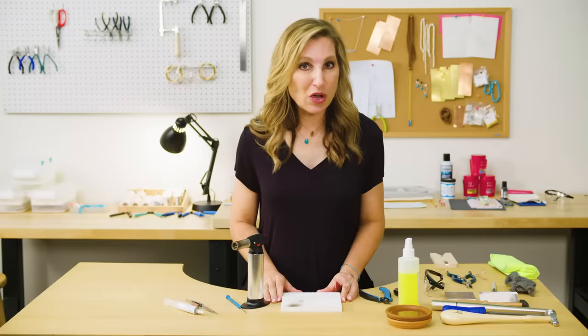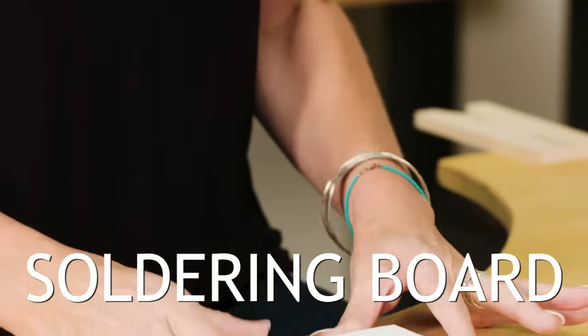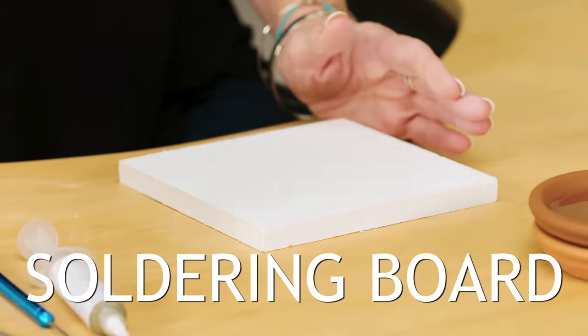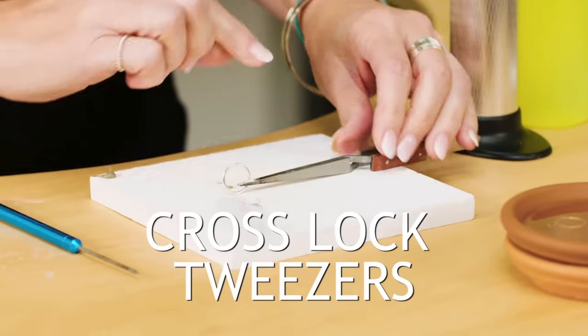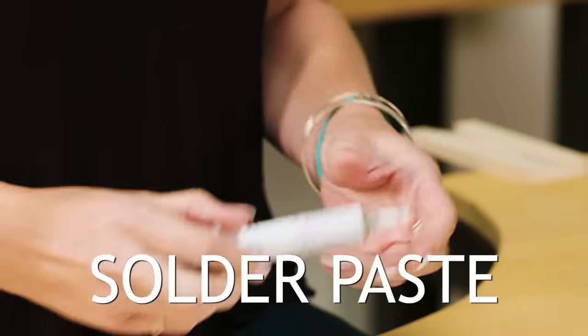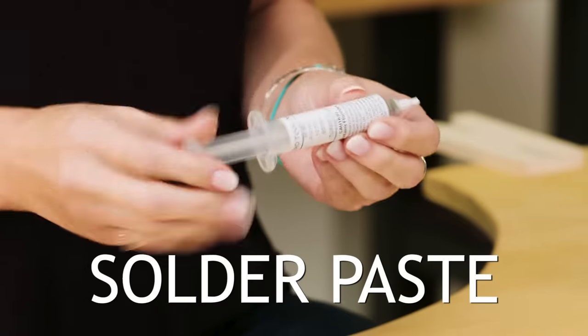Don't forget the essential items that you're going to need to get started soldering: a soldering board or fireproof surface, your torch, solder pick, cross-locked tweezer to keep from burning your fingers, and of course, your paste solder, which already has the flux in it.